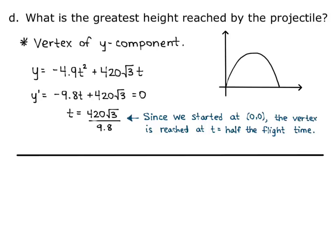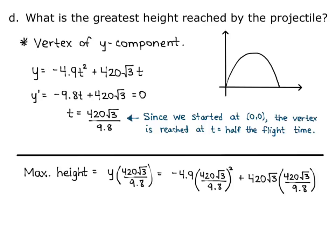Now we want the greatest height. Remember, y gives us the height. So the max height equals y evaluated at 420 square root of 3 over 9.8. Plugging that time into the y function: negative 4.9 times the quantity (420 square root of 3 over 9.8) squared, plus 420 square root of 3 times the quantity (420 square root of 3 over 9.8). Putting that all in the calculator and rounding to the nearest meter, we get 27,000 meters — that's the maximum height the projectile reaches.